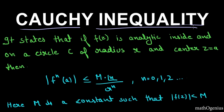I will not go too deep into the proof because it's not that important. It states that if f(z) is analytic inside and on a circle C of radius r and center z equal to a,